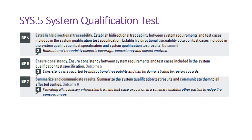BP6 talks about ensuring consistency between system requirements, system qualification testing activities, test cases, and test results. We ensure consistency by establishing bidirectional traceability and through review records. If the review activity is properly done and bidirectional traceability is established, we can confirm the requirement coverage achieved.